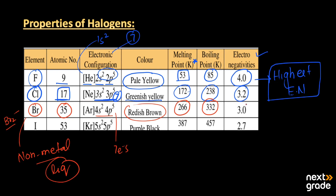The last element is iodine. Its atomic number is 53, with 53 total electrons, and its valence shell contains 7 electrons (2s + 2p5 configuration). Its color is purple-black, its melting point is 387 K, its boiling point is 457 K, and its electronegativity is 2.7. As you move down the group, the electronegative character decreases.